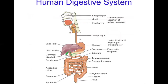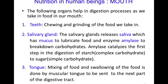This is a labeled diagram that will help you understand the various parts of the human digestive system. The following organs help in the digestion process as we take in food in our mouth.